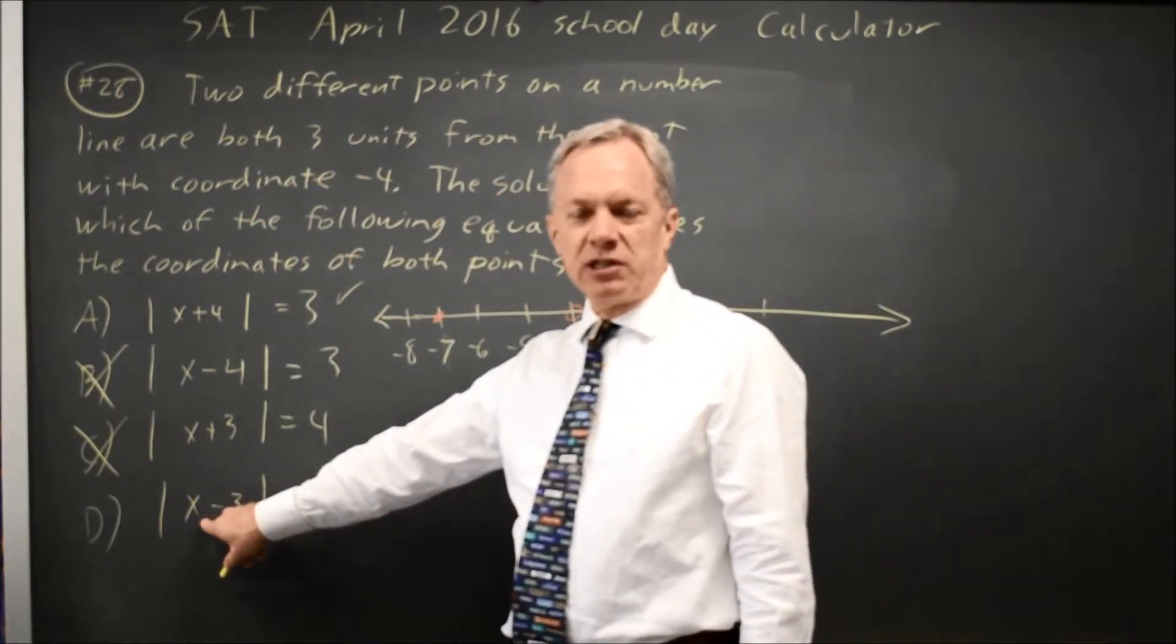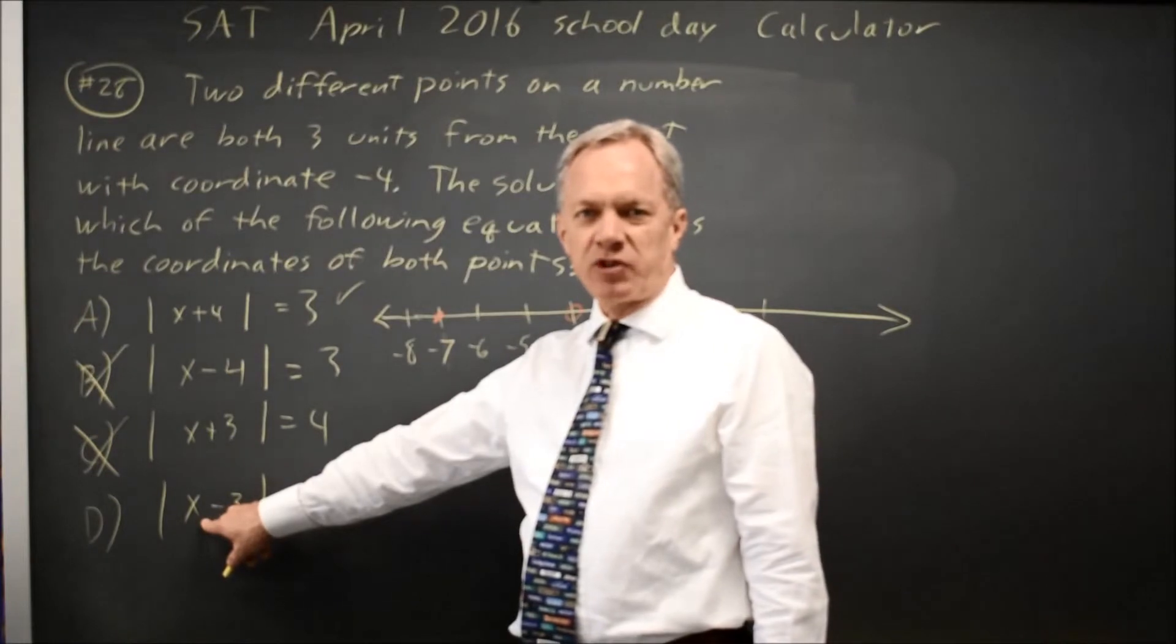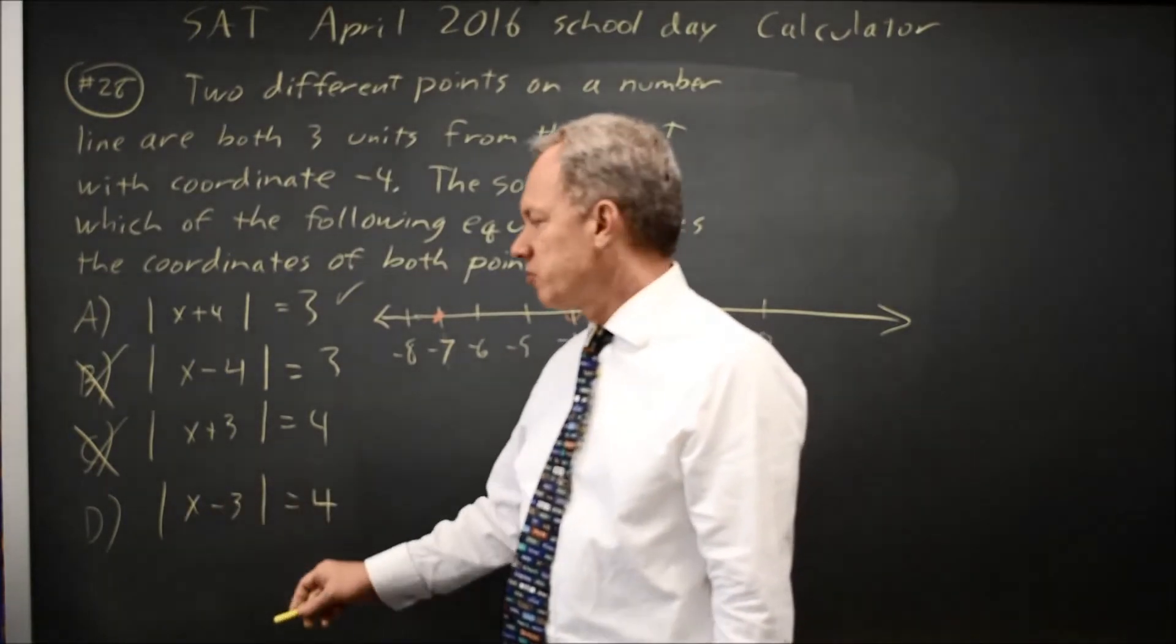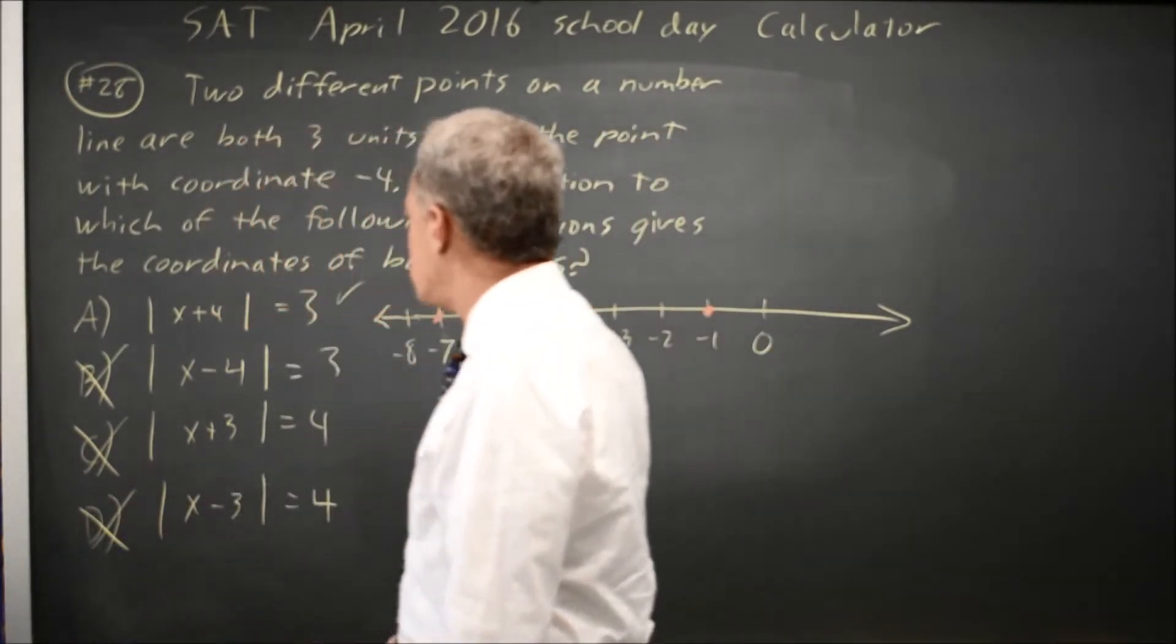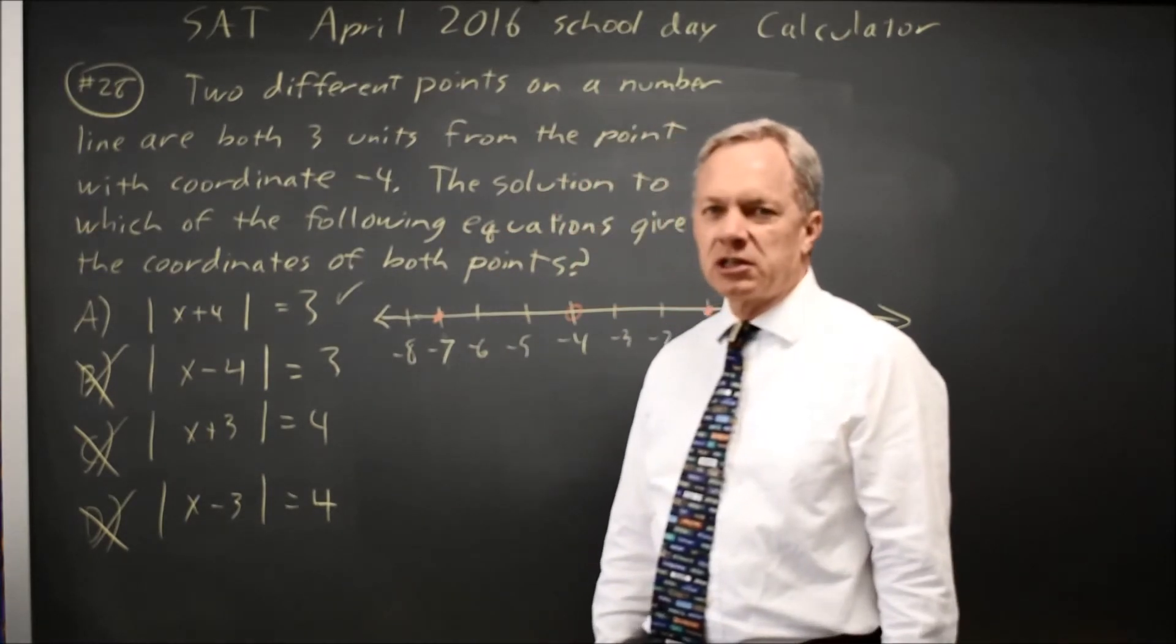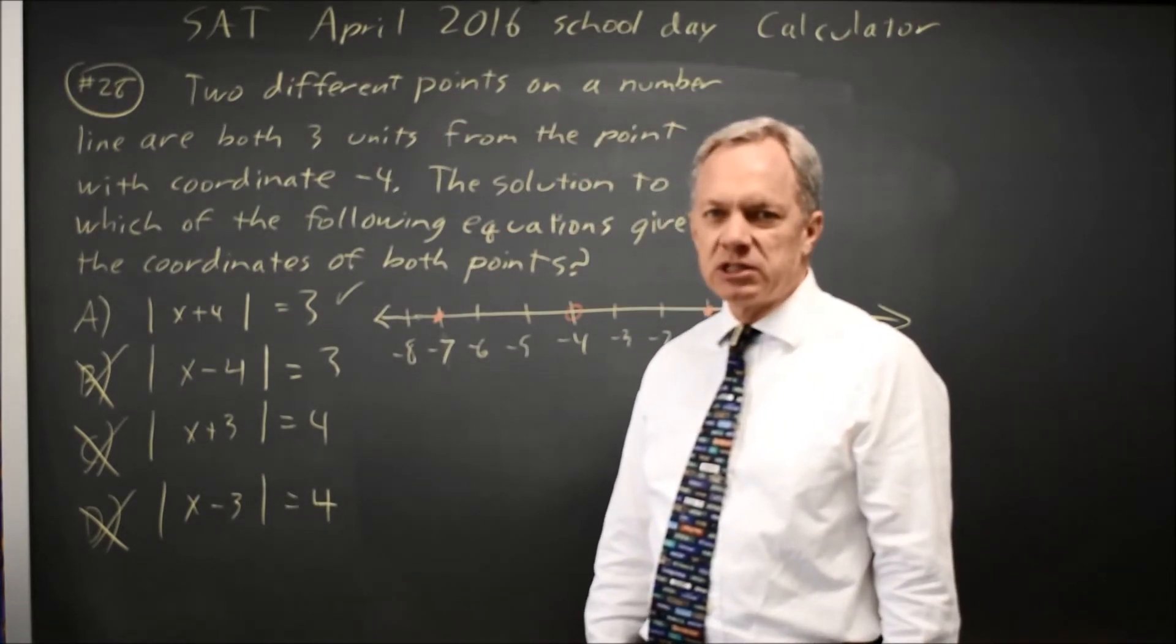Negative 7 minus 3 is negative 10, absolute value of negative 10 is 10, which is not 4, so that does not work. The only absolute value equation that describes both points is choice A.